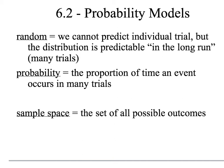We're talking about section 6.2 now, which is called probability models. I want to begin with a few definitions. The first definition is the word random. What do we actually mean by the word random? What we mean by random is we cannot predict any individual trial or event, but the distribution is predictable in the long run, meaning after many, many trials.